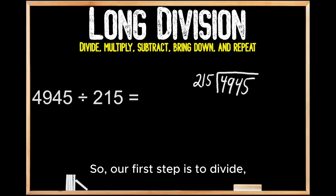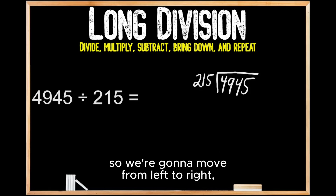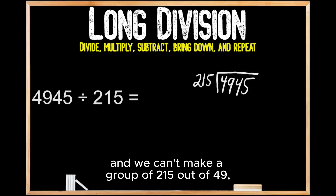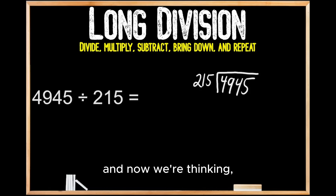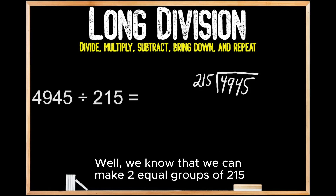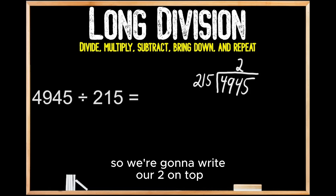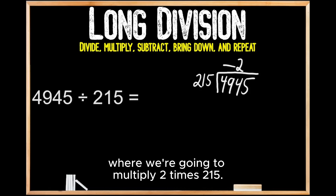Our first step is to divide. We can't make a group of 215 out of 4, so we move from left to right. We can't make a group of 215 out of 49, so we move left to right again. Now we're thinking: how many equal groups of 215 can we make out of 494? We know we can make two equal groups of 215, so we're going to write our 2 on top of the 4.